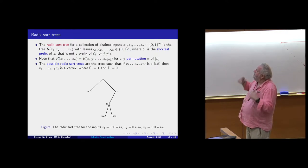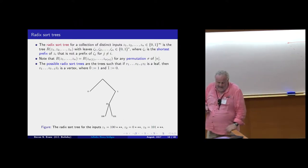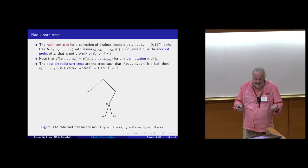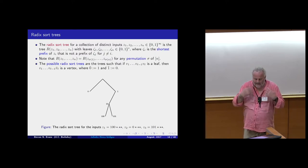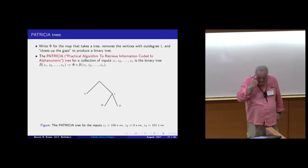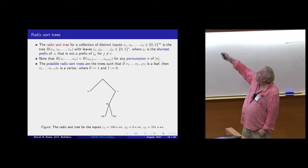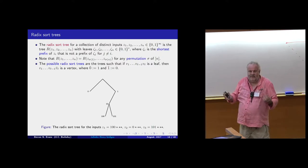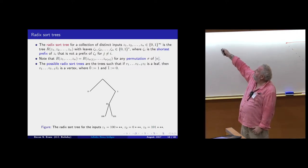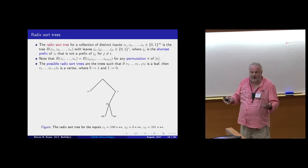This data structure has a few important properties, the most important being that it's permutation invariant: if I input the infinite strings in a different order, I get the same radix sort tree. However, a vertex of degree one has only one child and is kind of redundant for the purpose of sorting things in lexicographic order. If I expunged it, deleted it, and slid this subtree up to its position, the resulting tree would still have the property that leaves read left to right give lexicographic order.